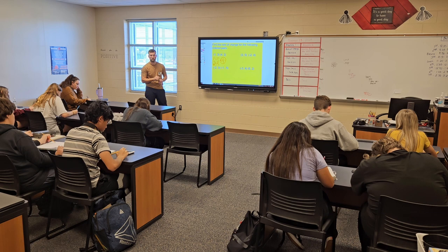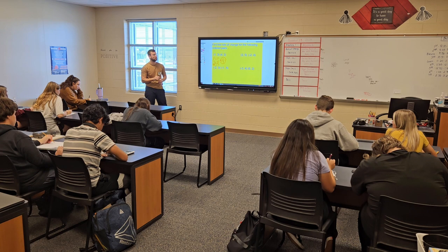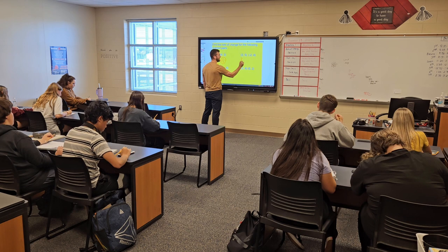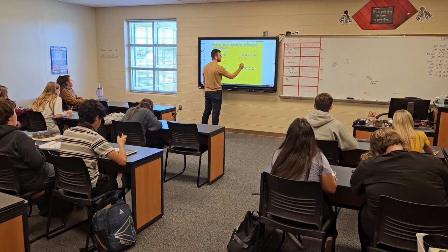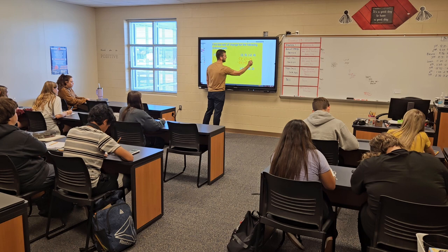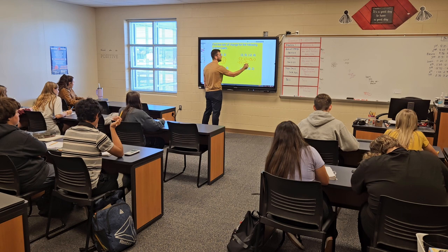Does anyone have the answer? Almost. That is one over five. So we'll do it — 3, 5 minus negative 2, 4. That's going to be: 3 minus negative 2 is 5, and the y over x is one fifth.